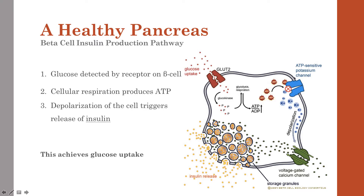This ATP is then activated on an ATP-sensitive potassium channel. The positive charges that the potassiums carry cause the depolarization of the cell. With that depolarization, a voltage-gated calcium channel is triggered to open and intake calcium. Then it goes to these vesicle transports in these buds, and they come out containing insulin.